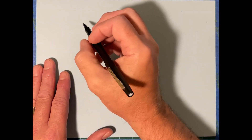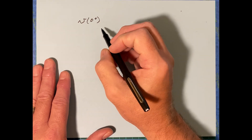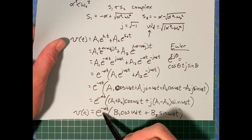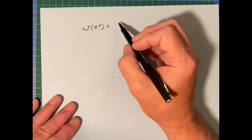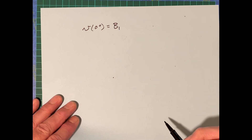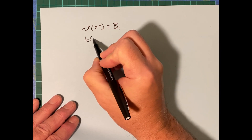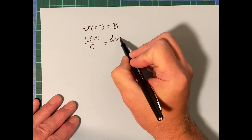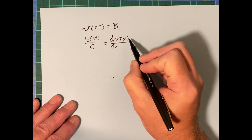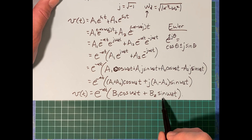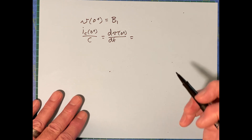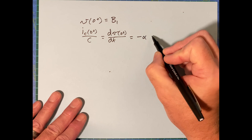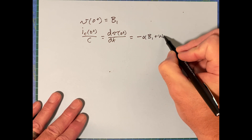Then you need to figure out the voltage at t = 0+. If you plug in t = 0, the exponential becomes one, the cosine term is also one, and the sine term goes away — so the voltage at t = 0 is just B1. The other initial condition is iC(0+) divided by C, which equals dV/dt evaluated at zero plus. Taking the derivative using the product rule and evaluating at t = 0 gives: minus alpha times B1 plus omegaD times B2.